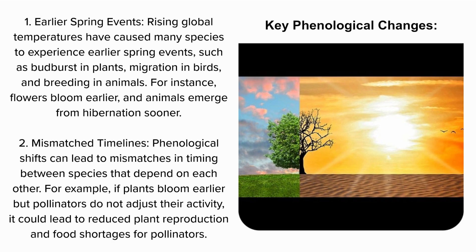2. Mismatched Timelines: Phenological shifts can lead to mismatches in timing between species that depend on each other. For example, if plants bloom earlier but pollinators do not adjust their activity, it could lead to reduced plant reproduction and food shortages for pollinators.